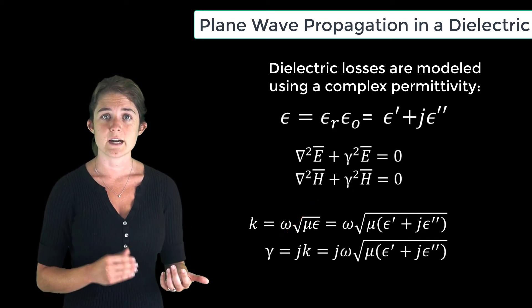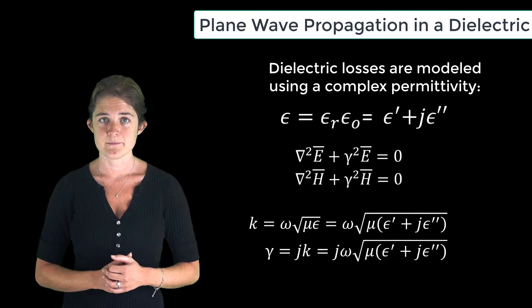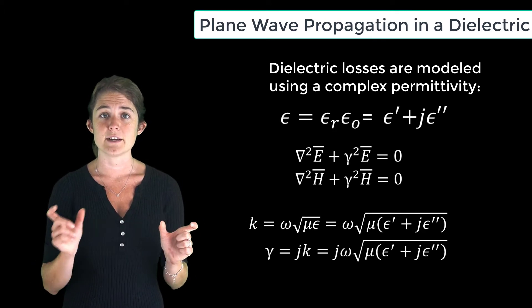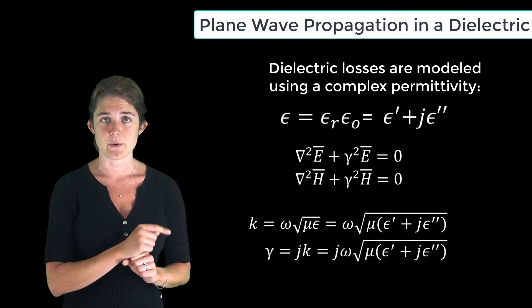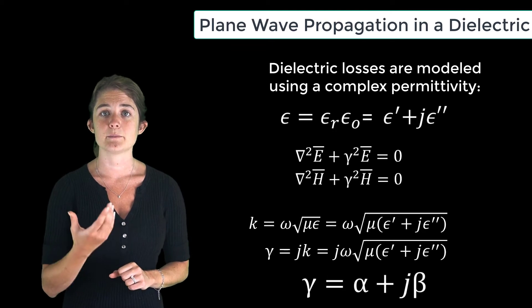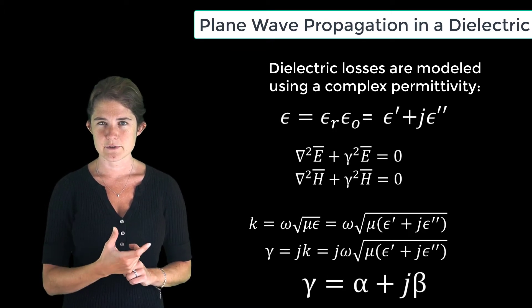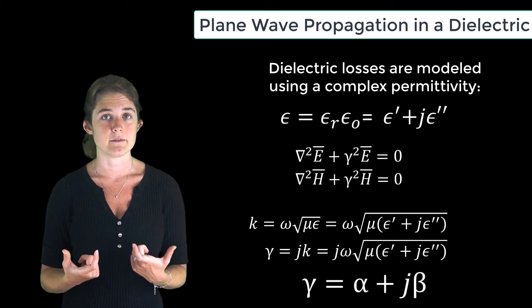Or j times omega square root of mu epsilon. We will split this into its real and imaginary components using this equation, gamma equals alpha plus j beta. This allows us to talk separately about the effects of each part of gamma.